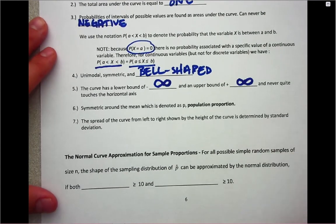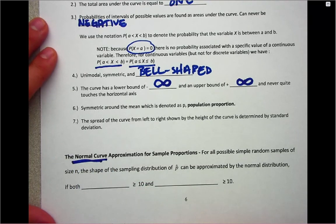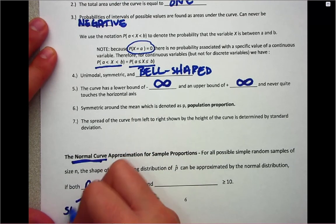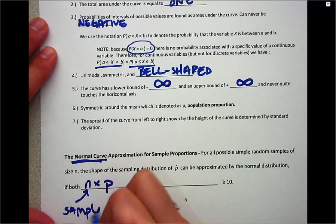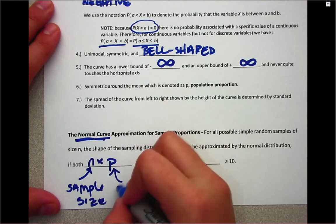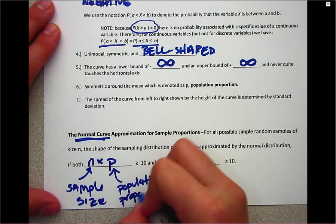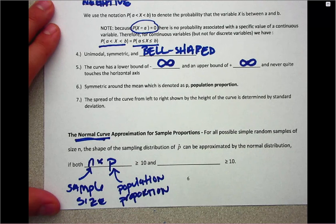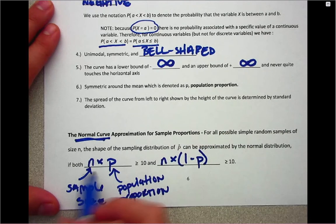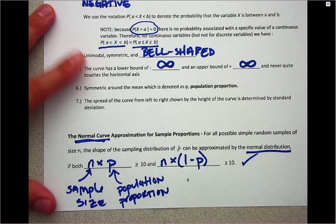The last thing is a reminder. How do we get to that normal curve or the normal distribution? Remember two things have to be true. You have to have both n times p, where n is the sample size and p is the population proportion. And remember because that's a value referring to the population, it's also described as a parameter. And n times 1 minus p, both of those products have to be greater than or equal to 10. If this is true, then it will be the normal distribution.